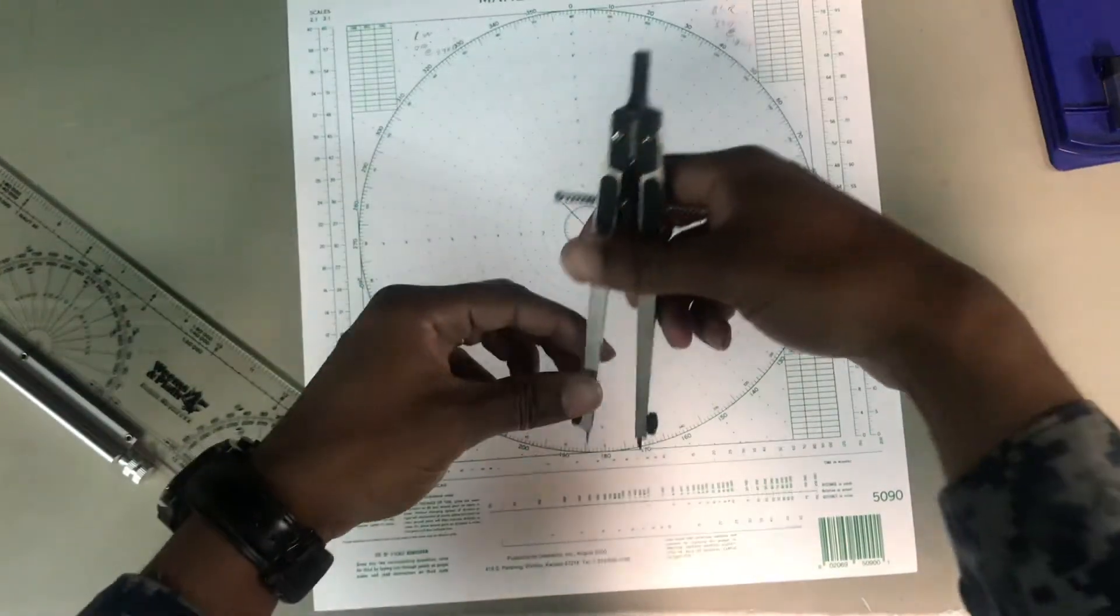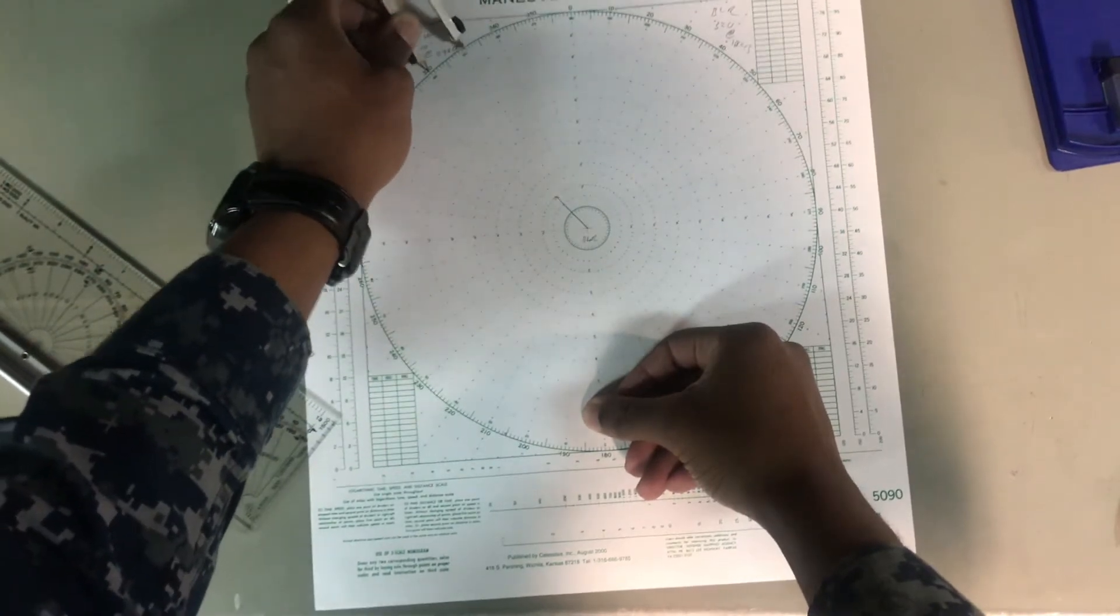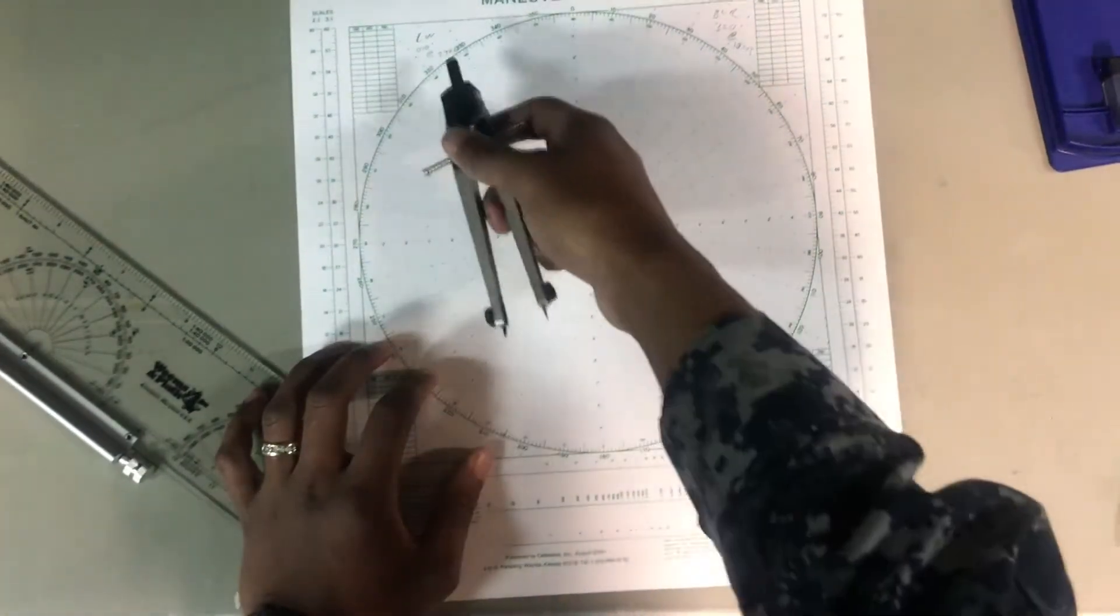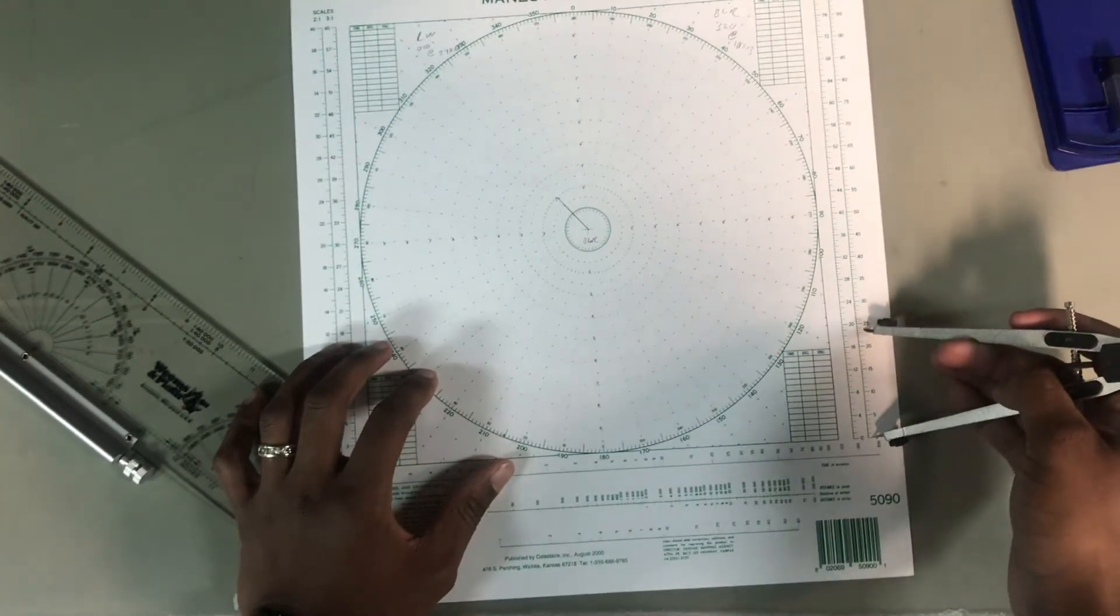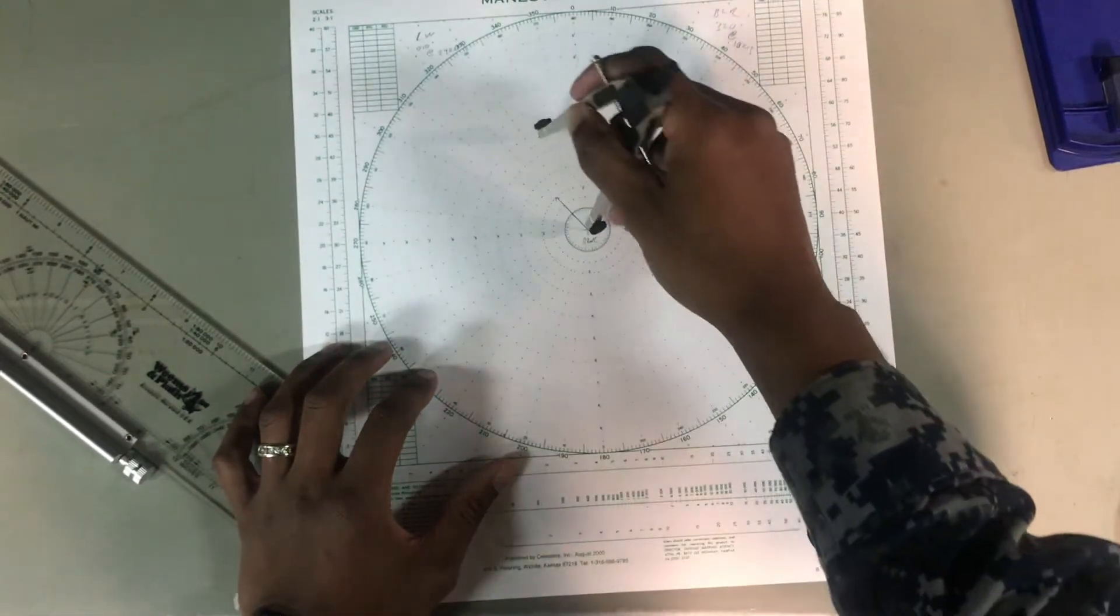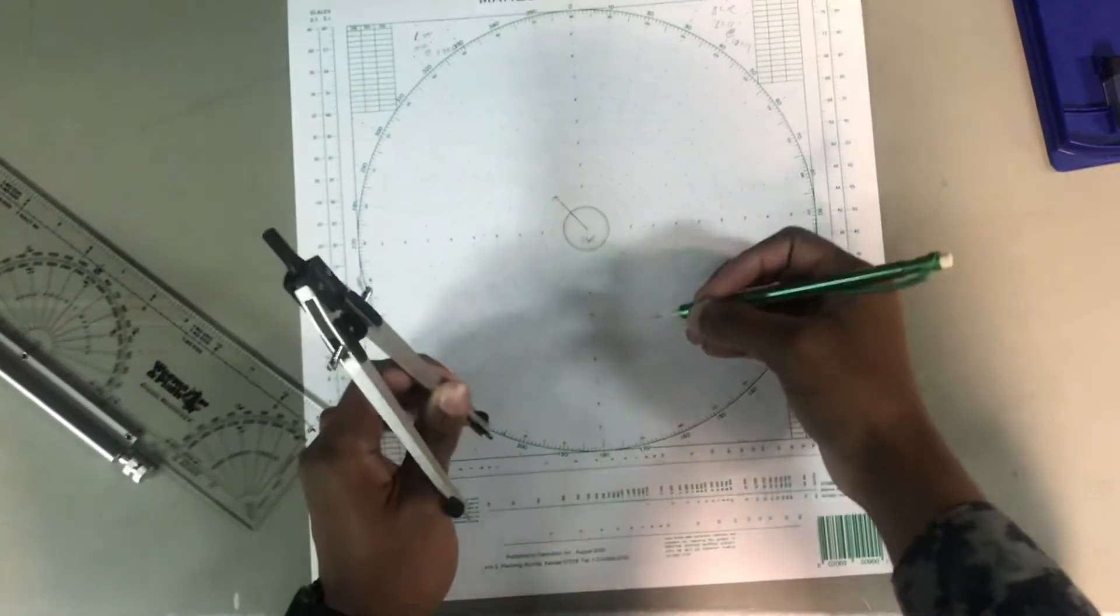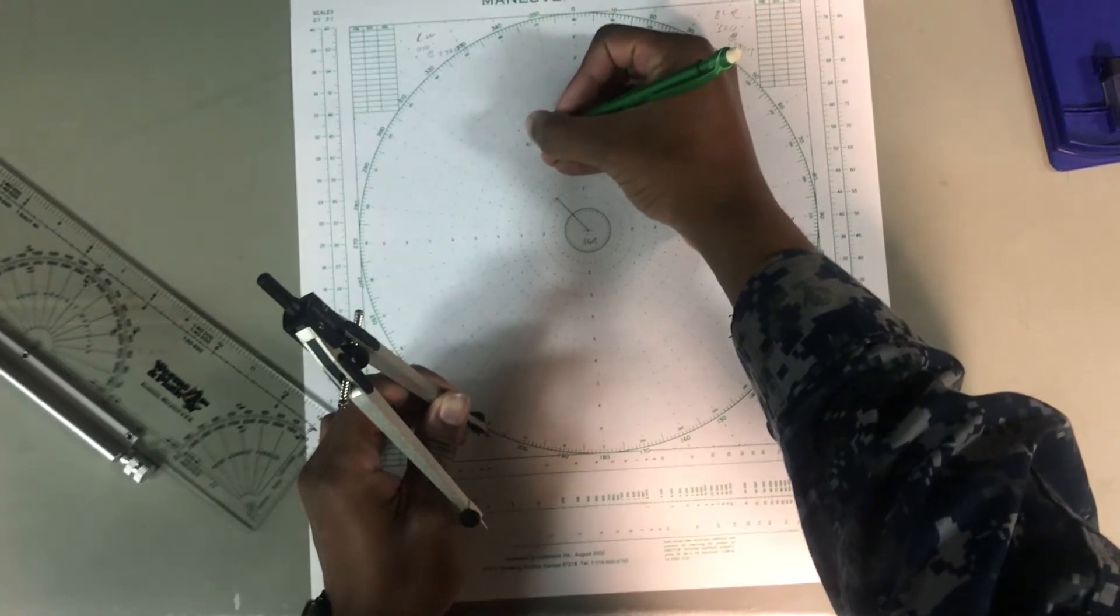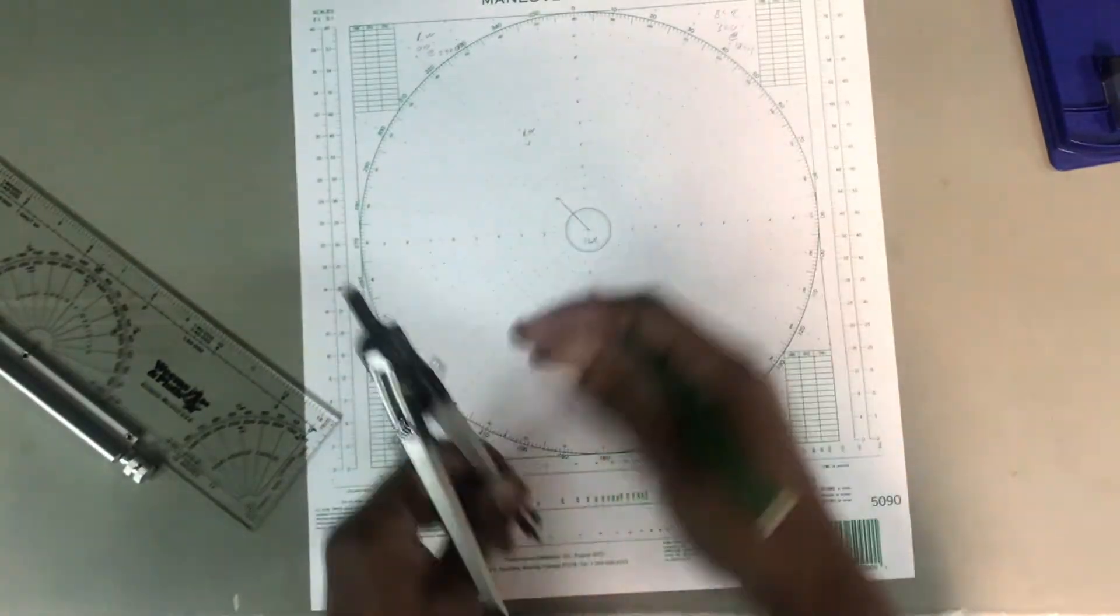Now I'll take that metal pointer, bring it over here, boom. So now I know that it's relative 010. Next one I'm going to do, I'm going to take the 24 knots that it's going, and with that 24 knots, go ahead and place a dot on that relative wind line, that 010 that it represents. And I'm going to draw an arrow going backwards. That way I know this represents relative wind.